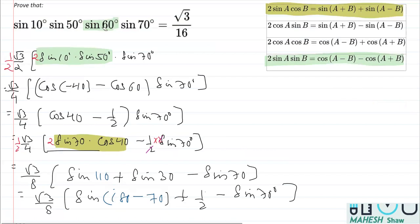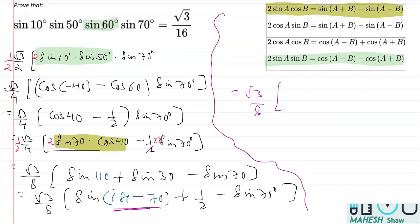Now for the remaining part, we have √3 by 8 times what we know as sin π minus θ. Sin π minus θ is the - we land on the second quadrant and sin π minus θ is sin θ. So this becomes sin 70°. So this is π actually. So this is sin π minus, considering this to be θ is sin θ. That's why I wrote sin 70° plus half minus sin 70°.